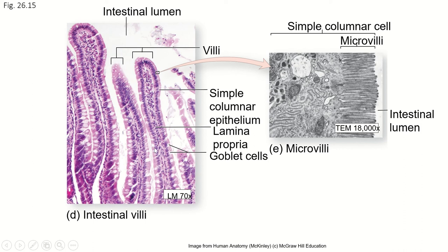We also have goblet cells making mucus, and blood vessels and some of the lamina propria connective tissue. This larger space here is actually the inside of the lacteal. This is a scanning electron micrograph, so you can actually see these tiny, tiny microvilli, but we have to be at 18,000 magnification to see them.